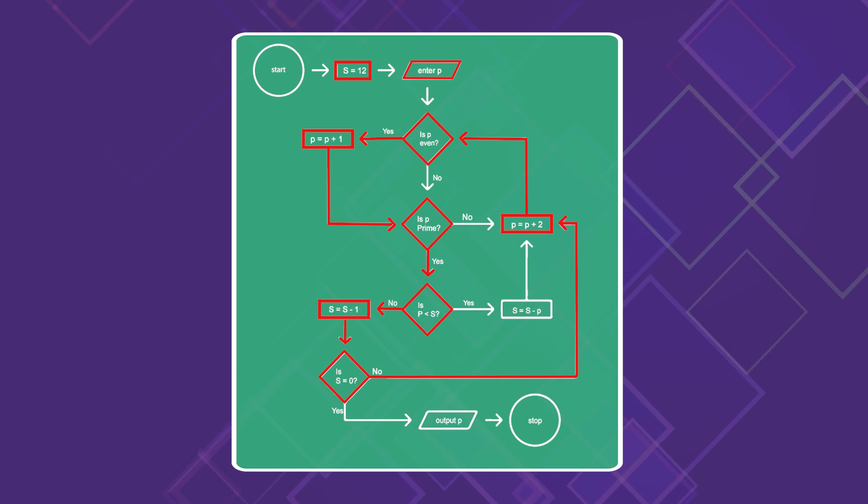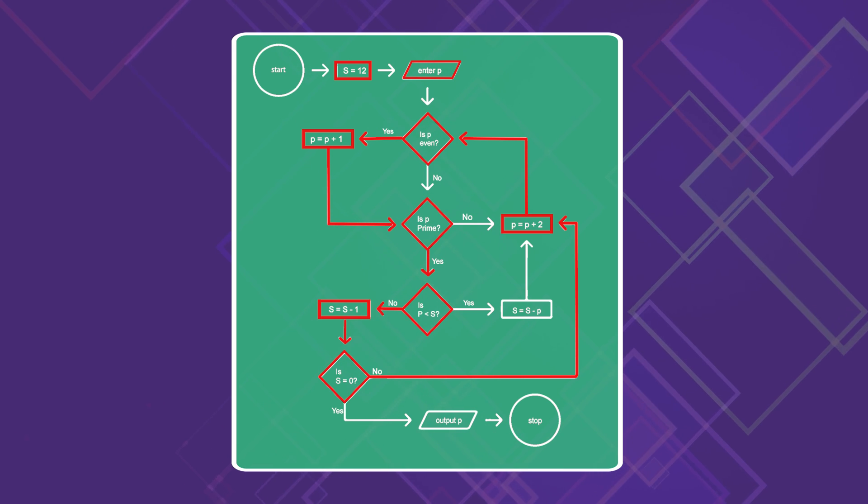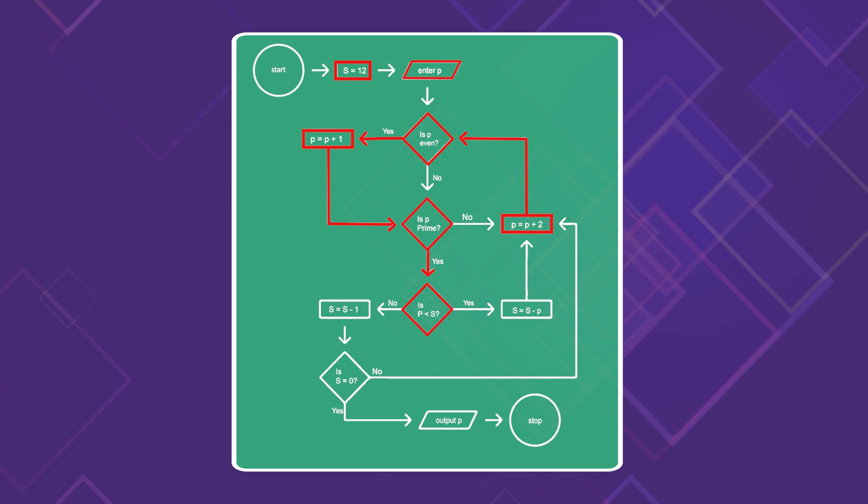Thus, usually s decreases by 1 every time p hits a prime number. So p will keep rising until it hits its 12th prime number value. But if the input is small, and p actually is smaller than s, then s decreases by p. That is to say, s decreases not just by 1, but by several notches all at once. The process accelerates significantly, and it will take far fewer steps to complete the entire process.